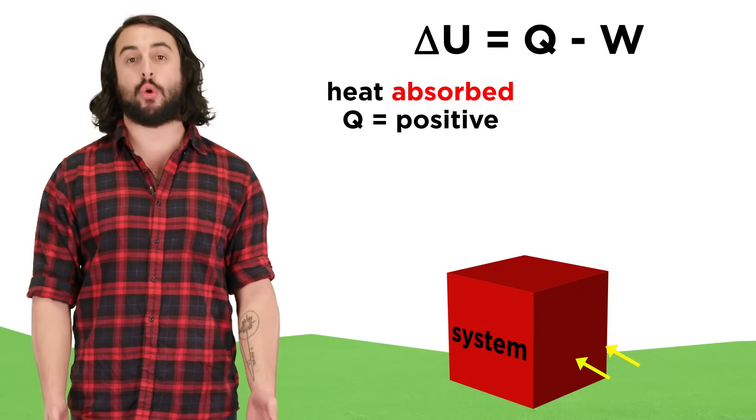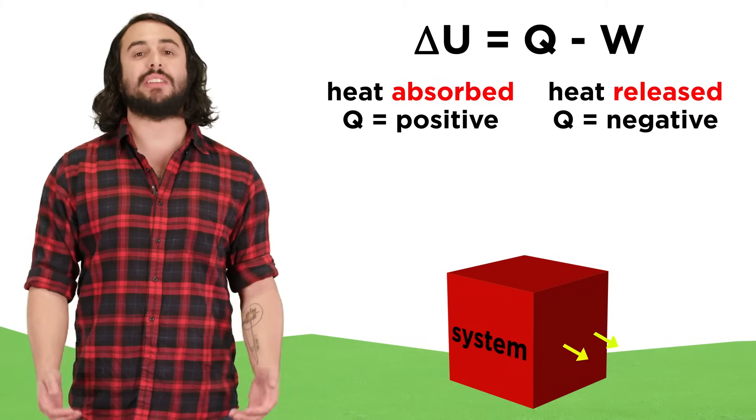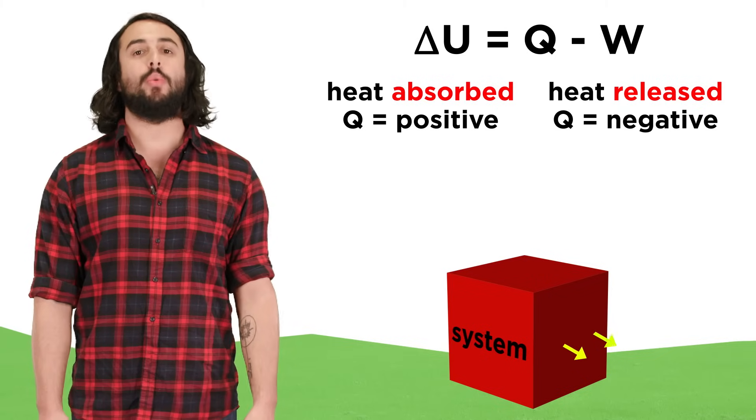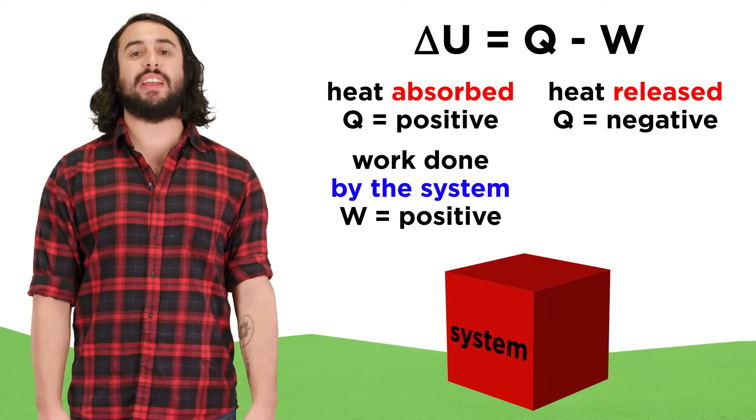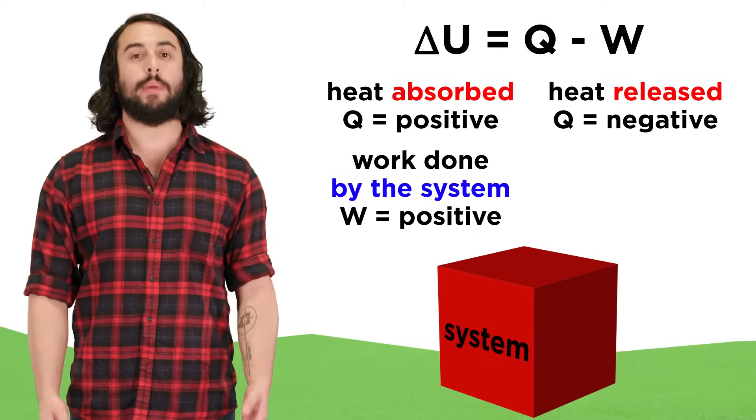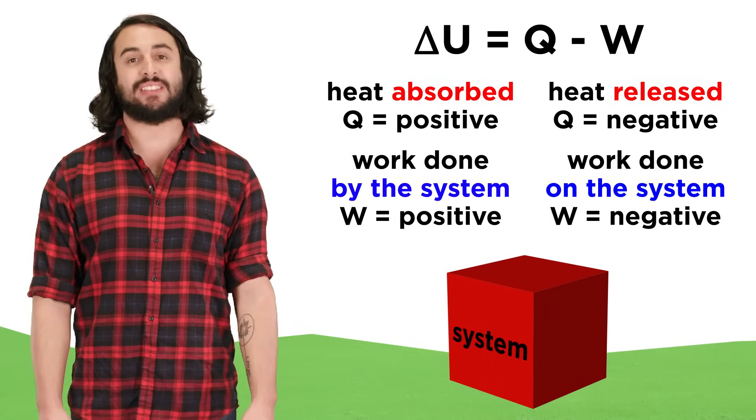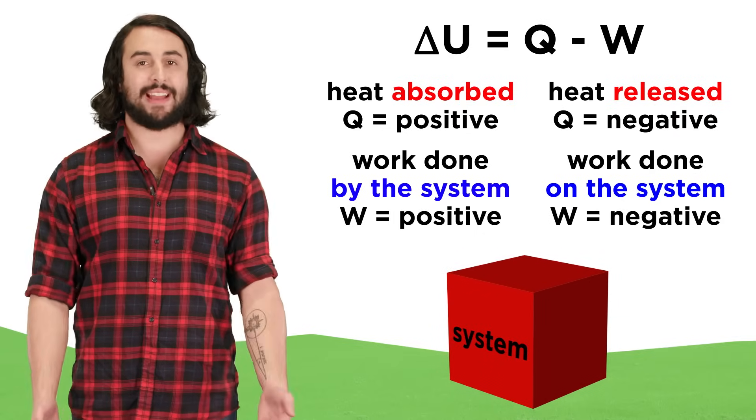Let's note that when heat is absorbed by the system, Q will be positive. If heat is lost by the system, Q will be negative. If work is done by the system, like an expanding gas, W will be positive. If work is done on the system by the surroundings, like gas compression, W will be negative.